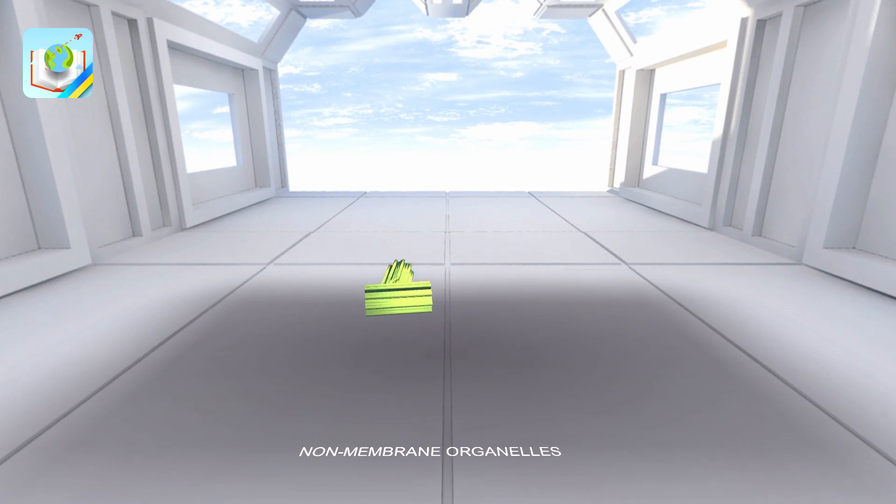The cell centre is an organelle that consists of two centrioles located in a light, compacted area of the cytoplasm. Centrioles are small organelles located in the cytoplasm near the nucleus, usually near the Golgi apparatus.